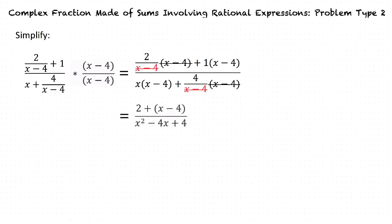We can see that in the numerator, we have like terms negative 4 and 2 that can be combined, which makes our fraction x minus 2 over x squared minus 4x plus 4.